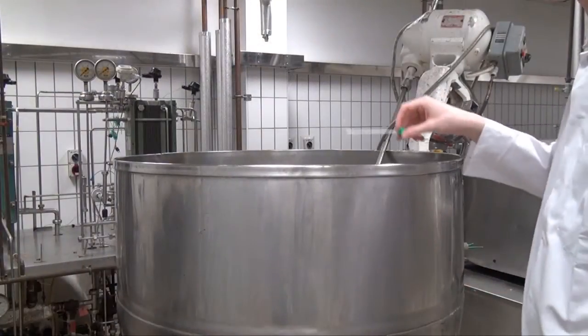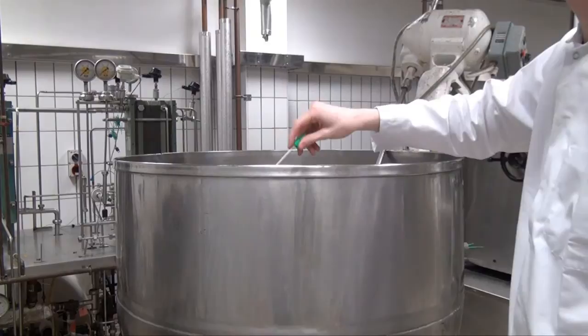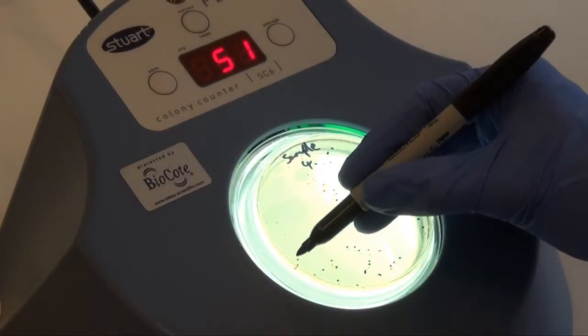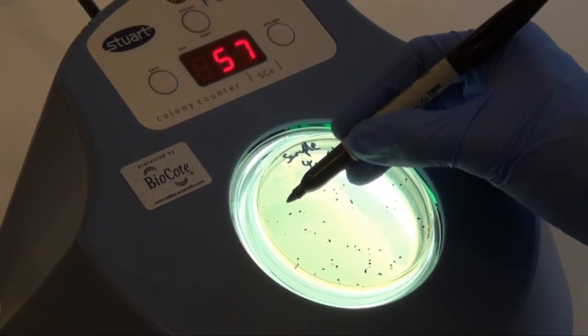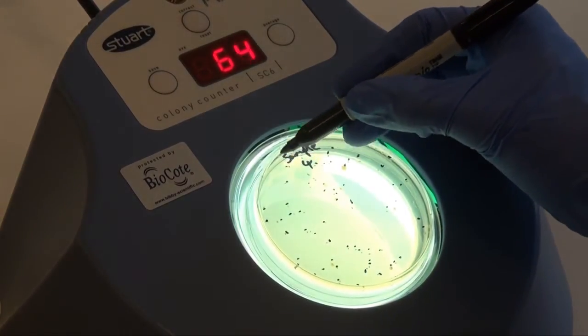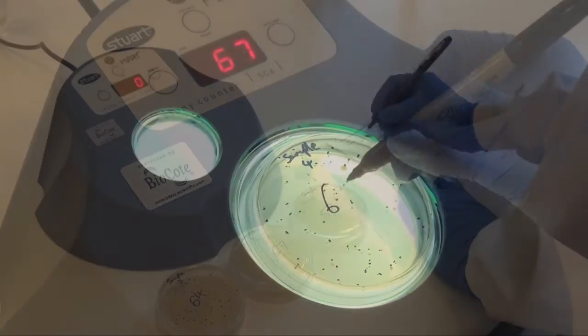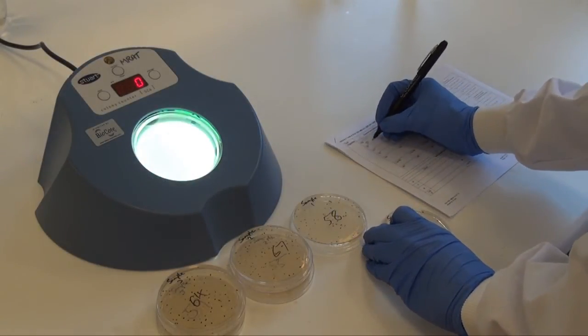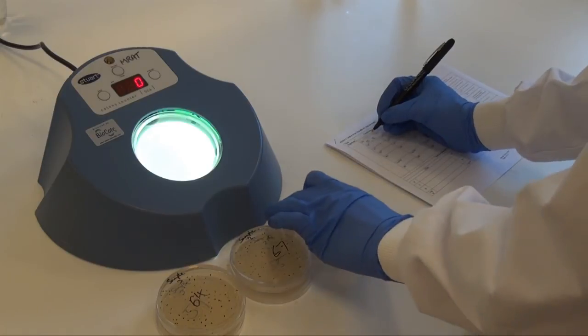The number of microorganisms present on surfaces can be determined before cleaning, after cleaning, and after disinfection. Results can be compared to ascertain whether there is a reduction at each stage of the clean, and to compare the effects of the trial disinfectant with an existing product.